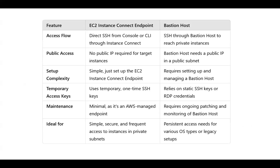Comparing both: access flow — EC2 Instance Connect Endpoint allows direct access from the console, CLI, or Instance Connect; bastion host only allows public access via a public IP. Complexity — the endpoint is very simple, just create and attach it during launch. Bastion requires setting up inbound access, security groups, and SSH forwarding. Temporary keys — the endpoint uses one-time temporary SSH keys, while bastion relies on static SSH keys or RDP credentials. Maintenance — minimal for the endpoint since it's managed by AWS; for bastion you must manage patching, monitoring, and scaling yourself.